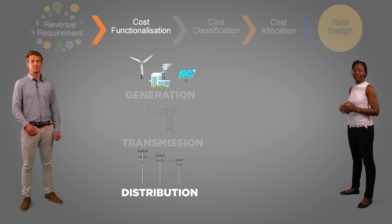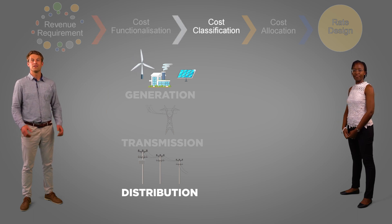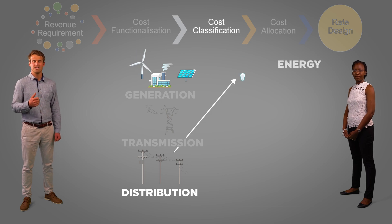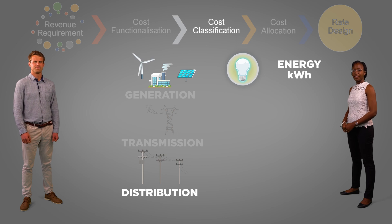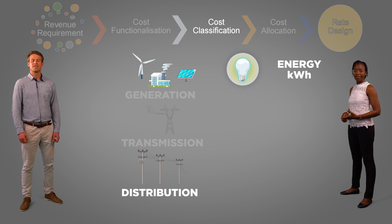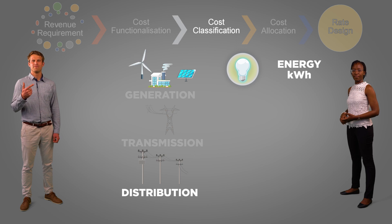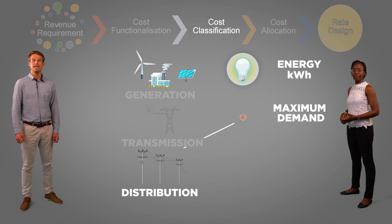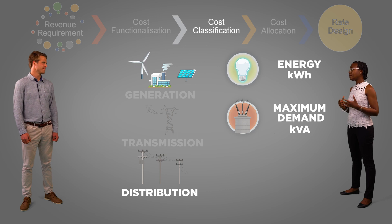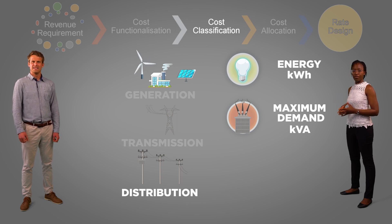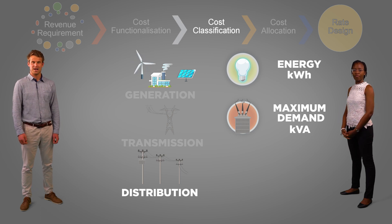But the next step is a little bit more complicated. The costs are then grouped into their cost drivers. The first cost driver is energy in kilowatt hours. An example of this is ESCOM energy purchase costs — the more kilowatt hours consumed on your network, the more ESCOM energy purchase costs you will incur.